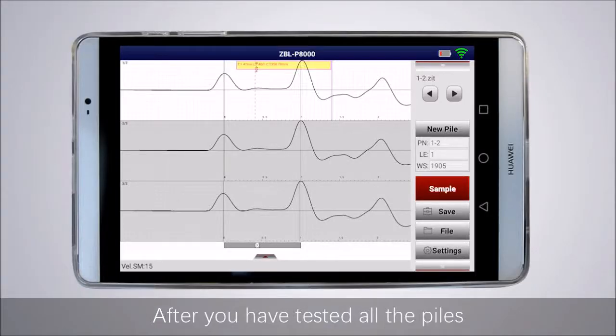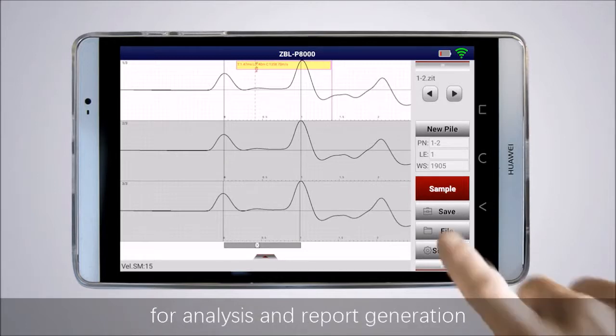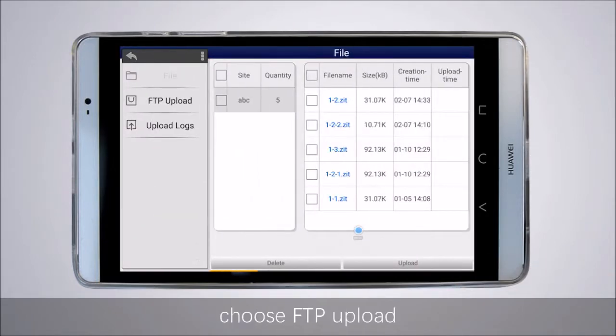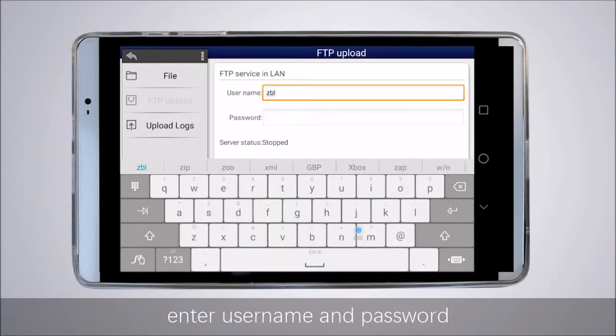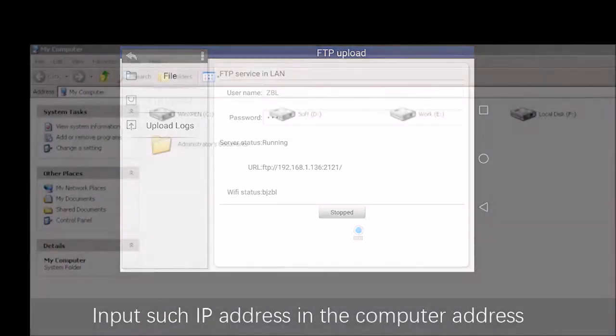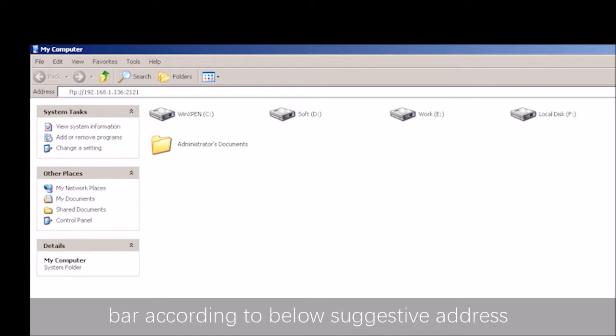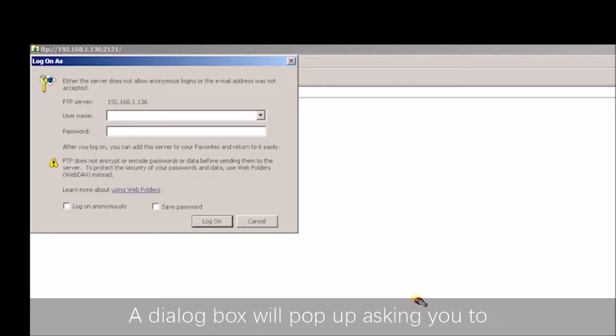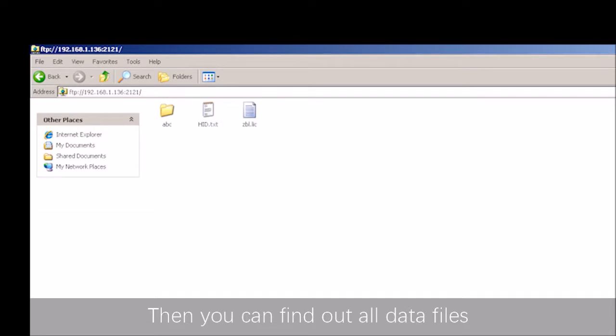After you have tested all the piles, data can be transferred to your computer for analysis and report generation. Click the file button and select FTP upload. Enter username and password and click the start button. The IP address of data accessed by PC will be generated. Input the search IP address in the computer address bar according to the suggested address. A dialog box will pop up asking you to enter the same username and password. Then you can find all data files. Select the data files and copy them into the PC.